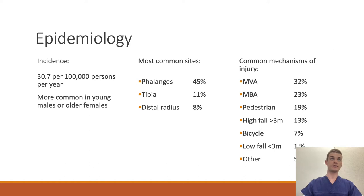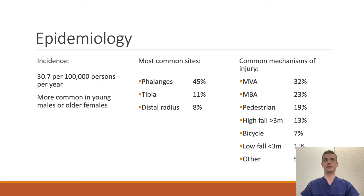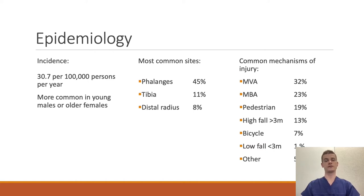Open fractures are often due to high-speed or high-energy collisions. The incidence is 30.7 per 100,000 persons per year. They are seemingly more common in young males, often due to association with high-speed traumas, motorbike accidents, car accidents, sports injuries and falls, and also in older females, often because of more brittle bones and skin and being more prone to falling.